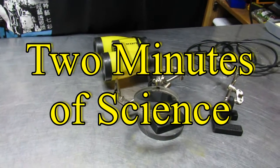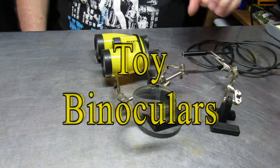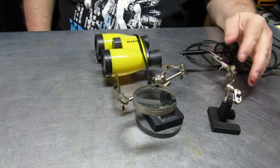For today's Two Minutes of Science, we're going to take a look at a pair of toy binoculars to see how they work and how they bend the light that comes into them.